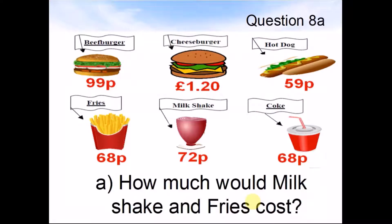Question 8a. Beef burger 99 pence. Cheese burger £1.20. Hot dog 59 pence. Fries 68 pence. Milkshake 72 pence. Coke 68 pence. How much would milkshake and fries cost? Pause the video and work out the answer.